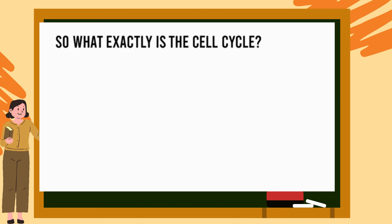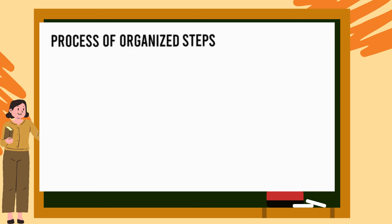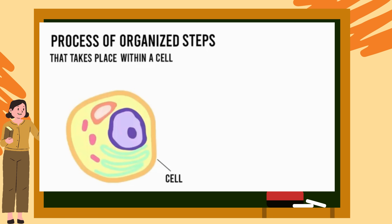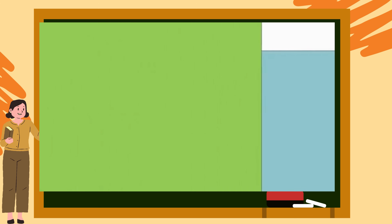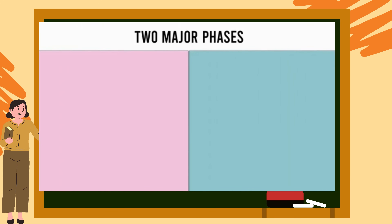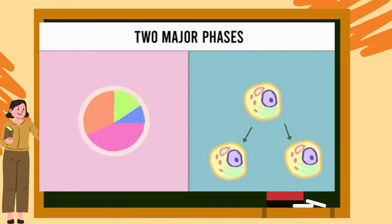So what exactly is the cell cycle? The cell cycle is a process of organized steps that takes place within a cell, causing it to produce two new daughter cells. This process can be split into two major phases. The first is interphase, during which the cell grows and DNA is replicated. The cell tends to spend most of its time during interphase throughout its lifespan.